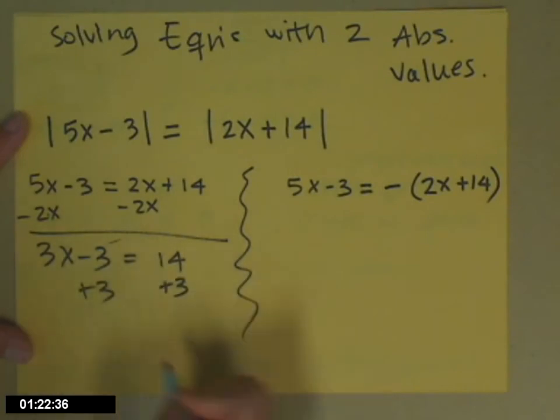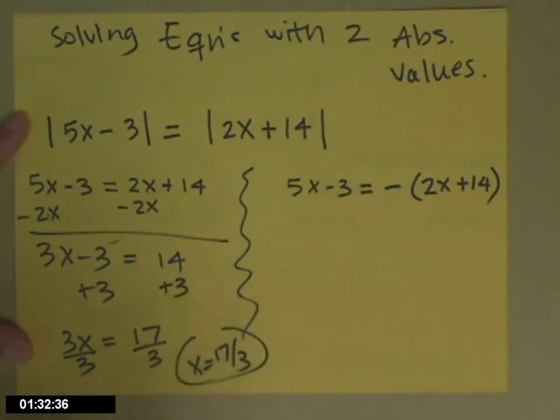Add 3 to both sides to get the x term by itself. And divide by 3 to get the x by itself. So x is 17 thirds. That's one of our answers.